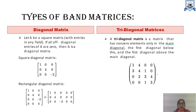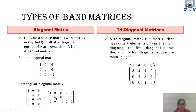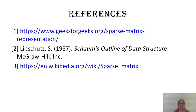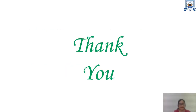Types of band matrices include diagonal and tridiagonal. A diagonal matrix has all non-zero elements situated along the diagonal, and can be square or rectangular. A tridiagonal matrix has non-zero values along the main diagonal as well as immediately above and below the main diagonal. Here are a few references and the book link followed for this topic. Thank you very much.